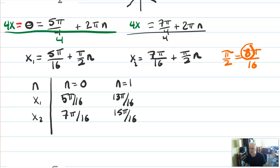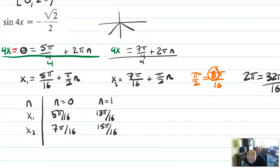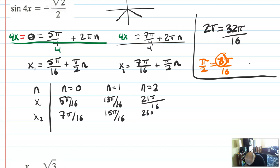15π over 16 is not even above π yet, so I clearly have to keep going. I also want to remember that 2π is 32π over 16, so anything less than 32π over 16 is a solution. If n equals 2, I add 8 to each numerator from n equals 1: 21π over 16 and 23π over 16. Still not above 32π, so go one more. If n equals 3: add 8 again to get 29π over 16 and 31π over 16.